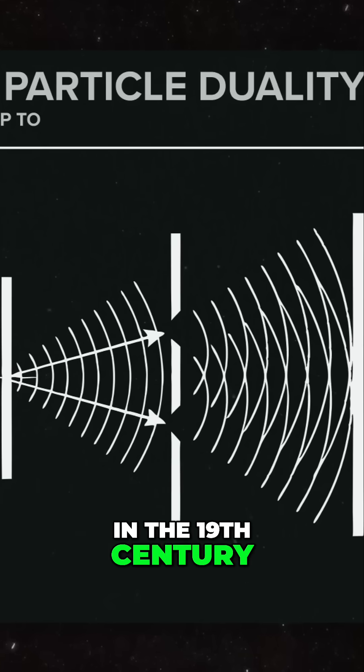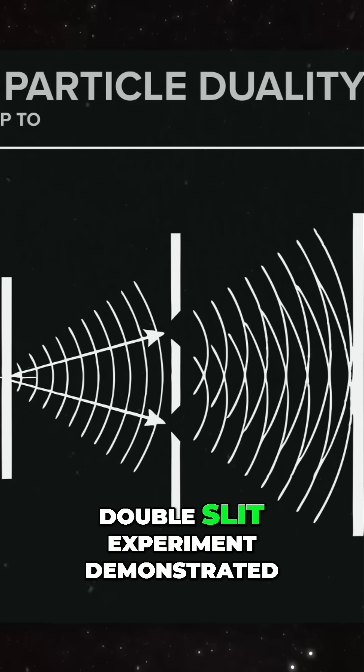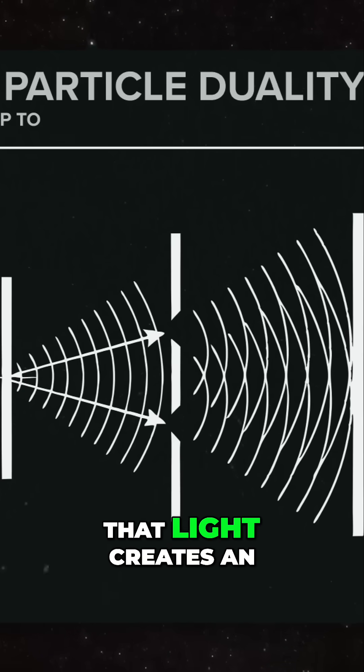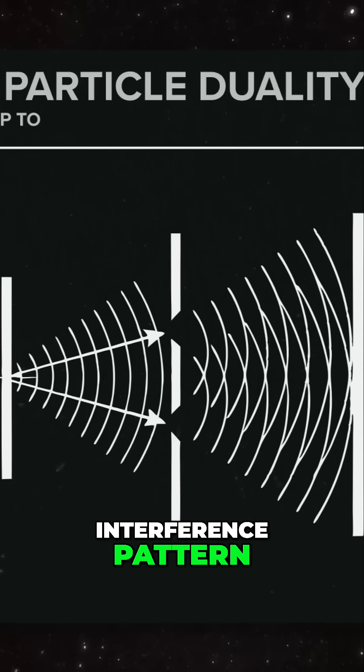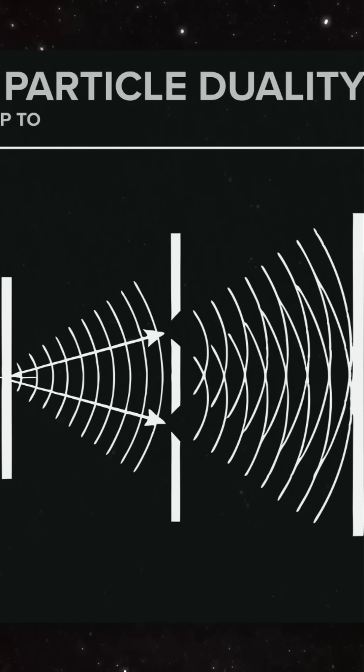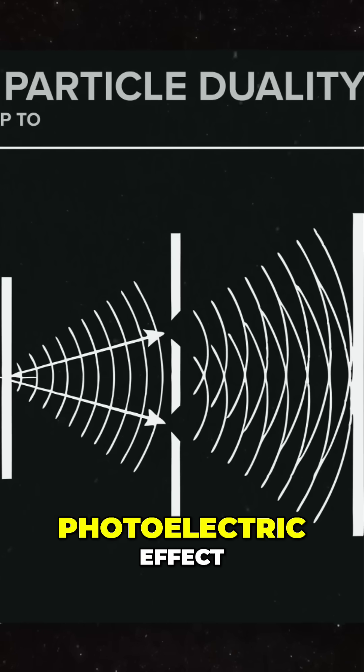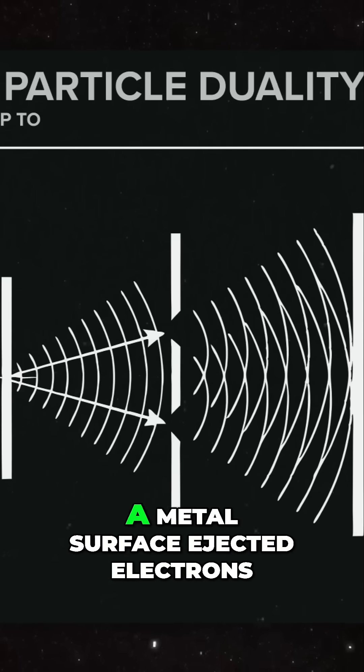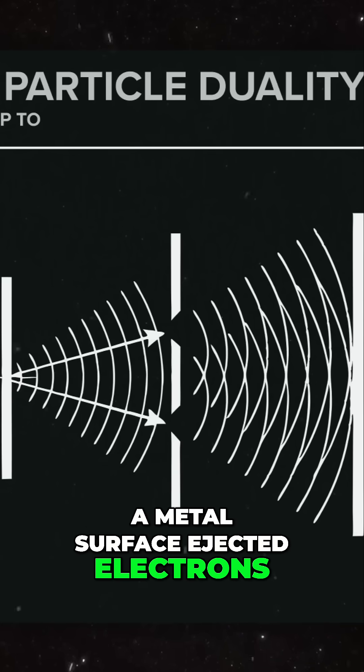The debate seemed settled in the 19th century when Thomas Young's famous double-slit experiment demonstrated that light creates an interference pattern, a hallmark of waves. But then came the photoelectric effect, where shining light on a metal surface ejected electrons.